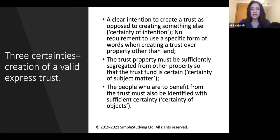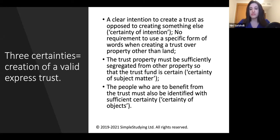The trust property must be sufficiently segregated from other property — that is certainty of subject matter. And finally, the people who are to benefit from the trust must also be identified with sufficient certainty. That is called certainty of objects.